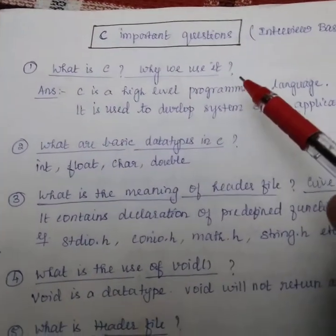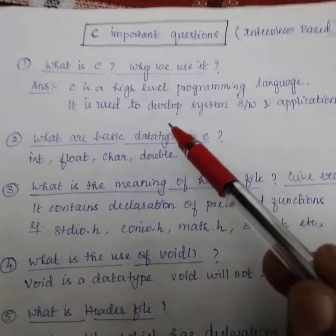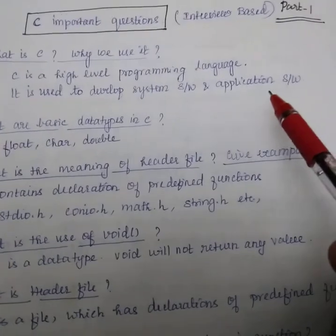What is C? Why we use it? C is a high level programming language. It is used to develop system software and application software.